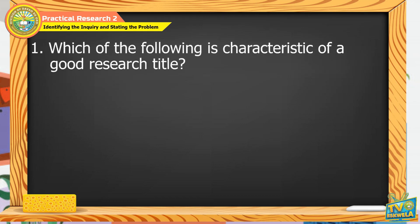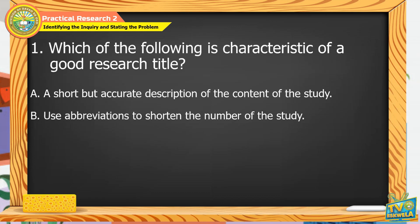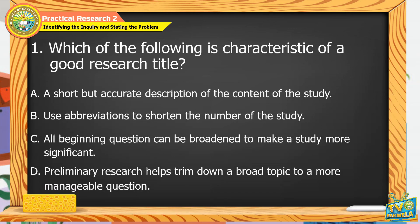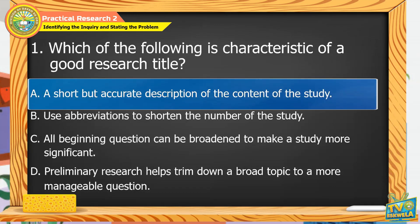Number 1. Which of the following is a characteristic of a good research title? A. A short but accurate description of the content of the study. B. Use abbreviations to shorten the number of the study. C. All beginning questions can be broadened to make a study more significant. D. Preliminary research helps trim down a broad topic to a more manageable question. The answer is letter A — a short but accurate description of the content of the study.